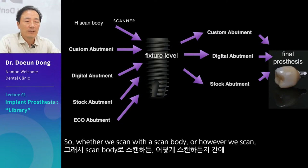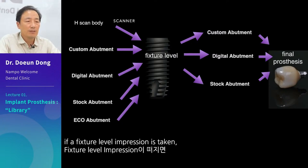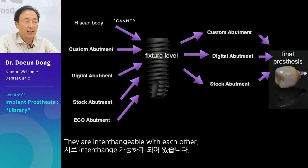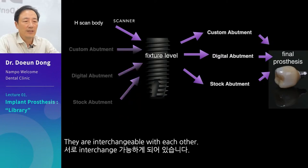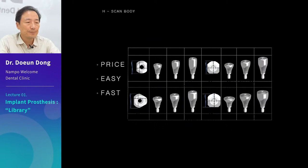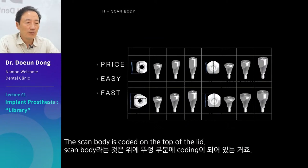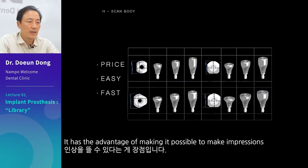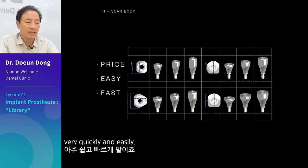Whether we scan with a scan body or however we scan, if a fixture level impression is taken, we can make a prosthesis however we want in the laboratory. They are interchangeable with each other. The scan body is coated on the top of the lid and is low cost. It has the advantage of making impressions very quickly and easily.